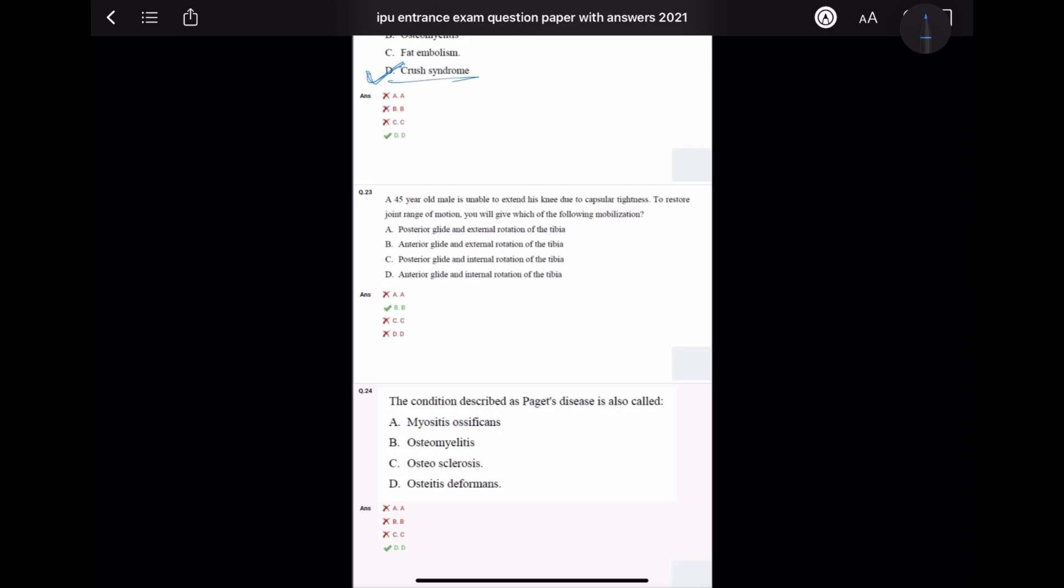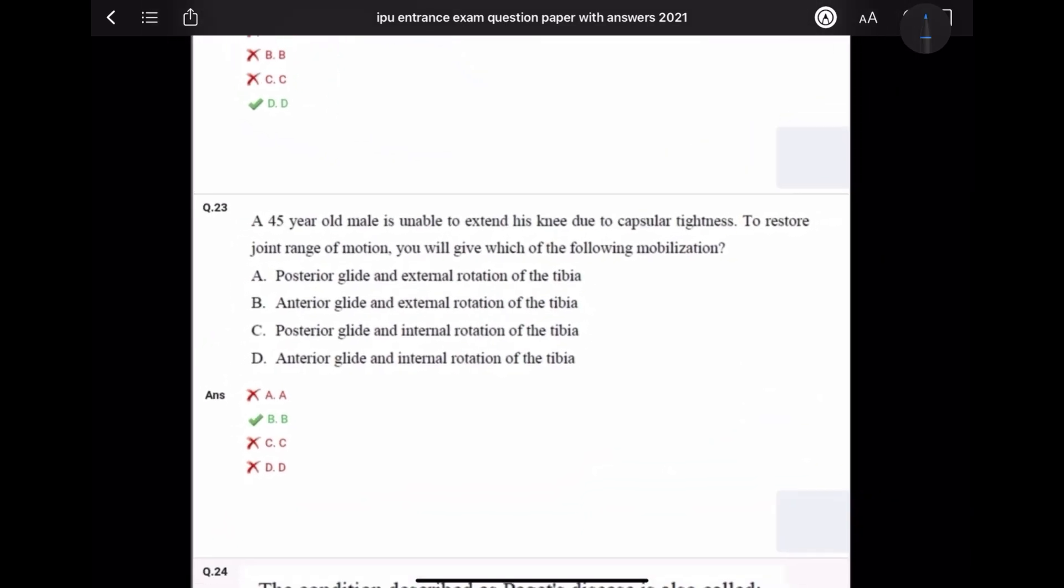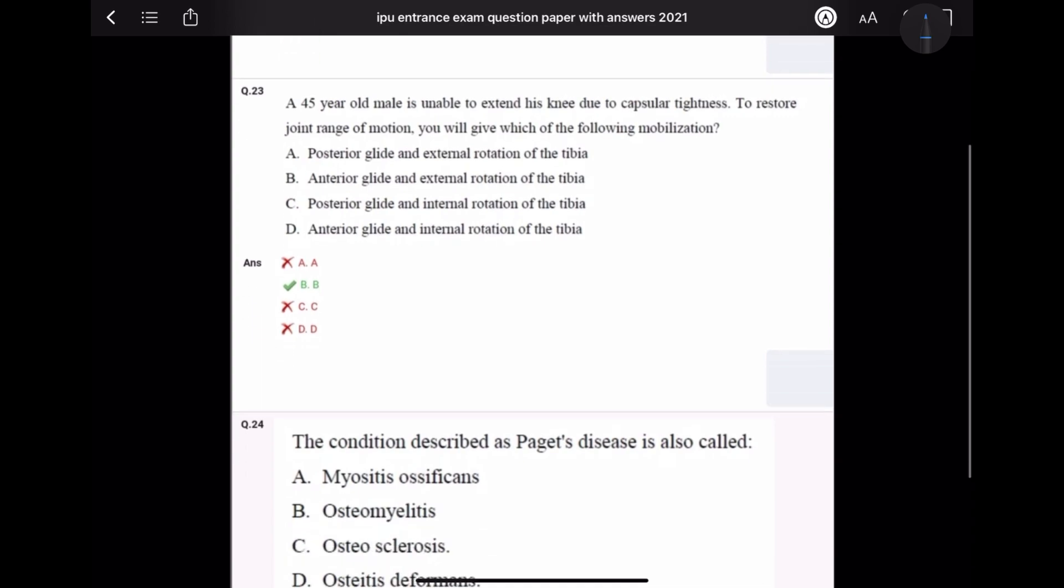Question number 23: A 45 year old male is unable to extend his knee due to capsular tightness. To restore joint range of motion, which mobilization will you give? The knee problem: 45 year old male cannot extend his knee because of tightness. The tibia is a concave articular surface.